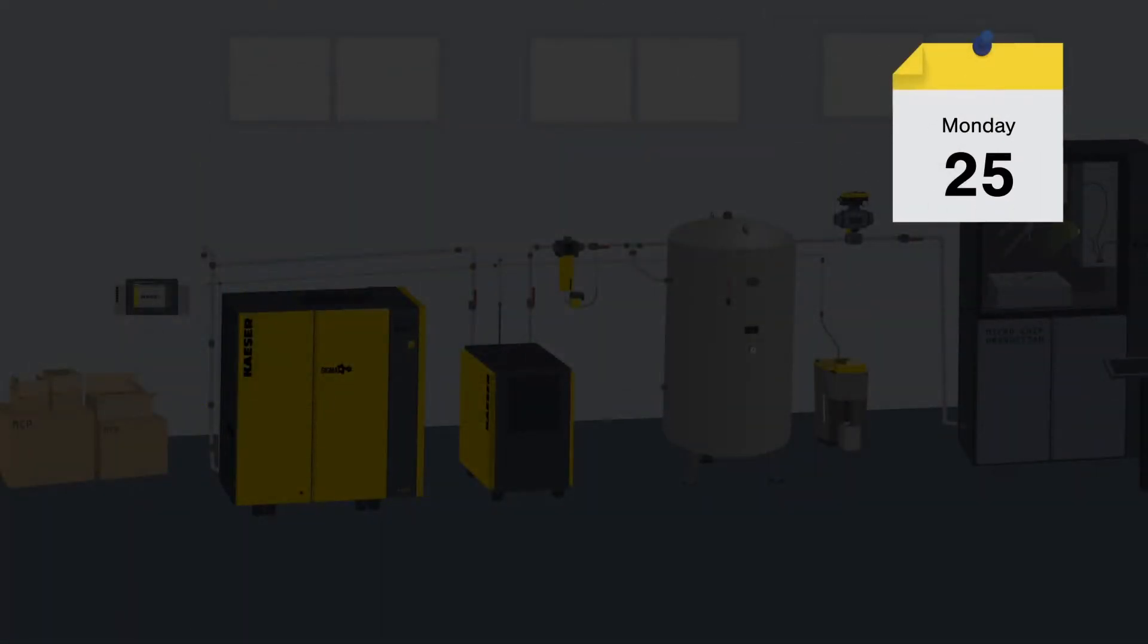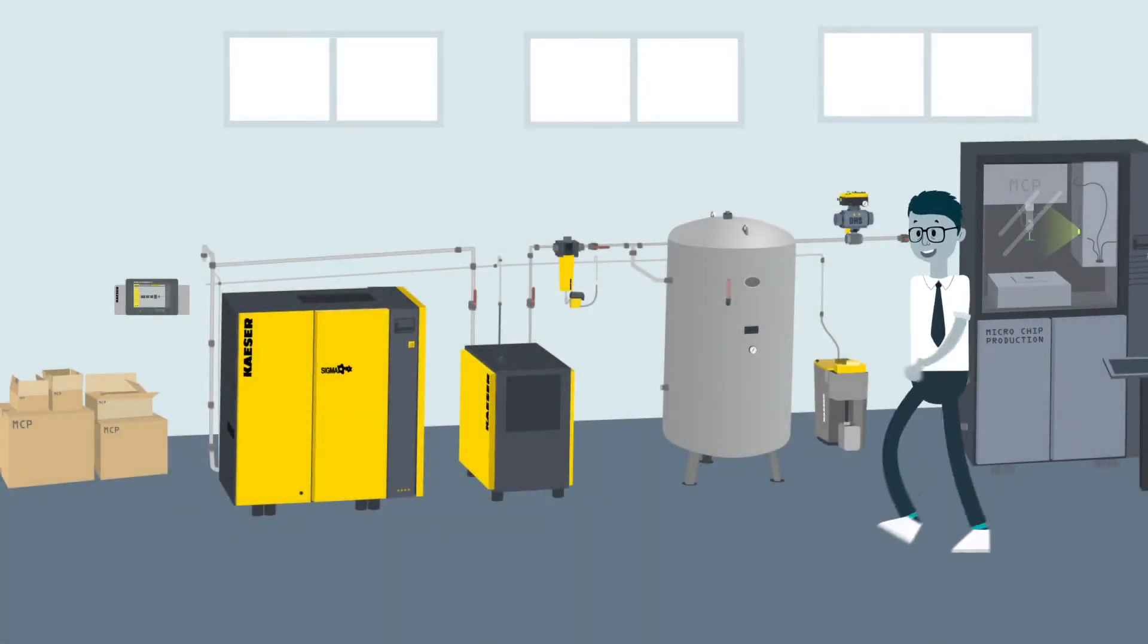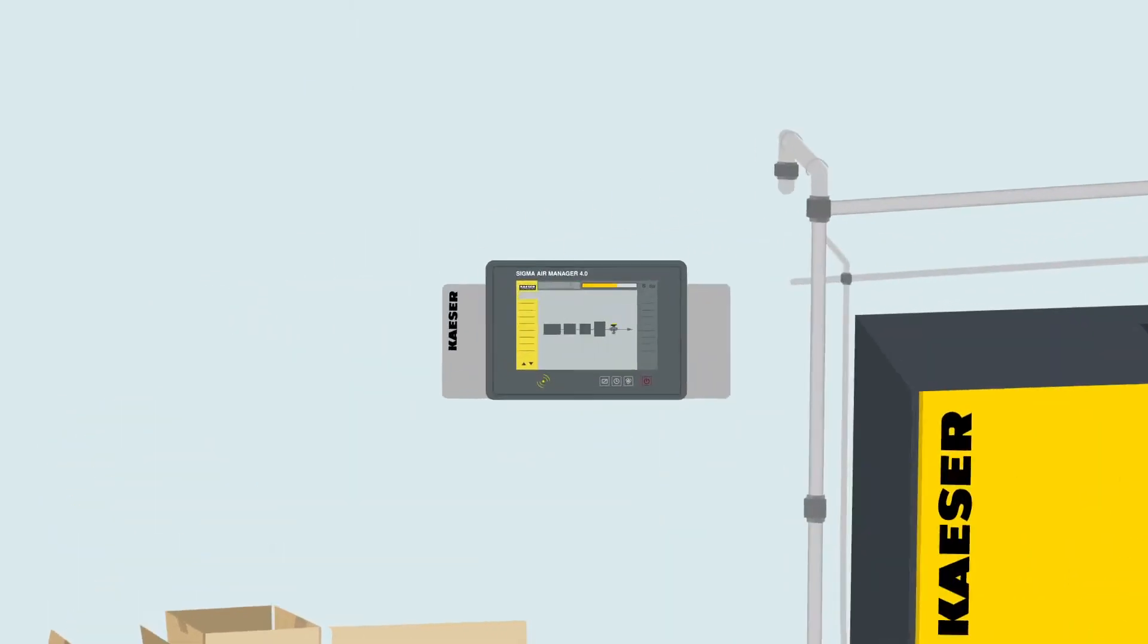It assures optimal flow speed of the compressed air in your system, which is of particular importance following weekends or operating breaks between shifts. With a DHS Air Main Charging System,